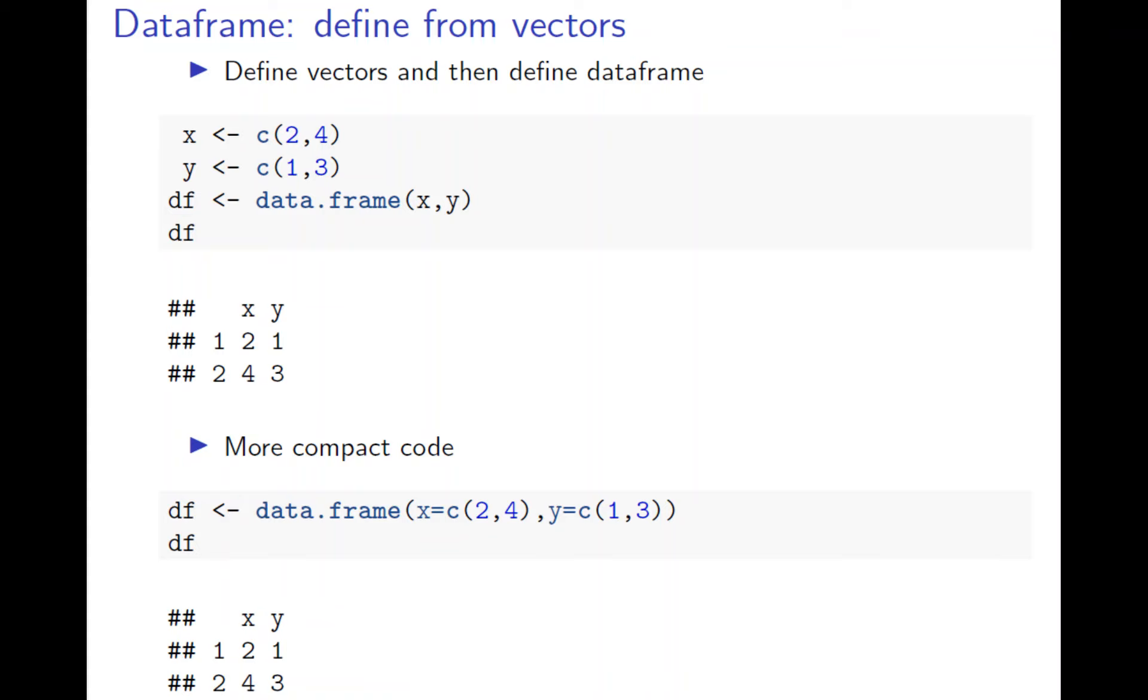How are other ways to work? Sometimes you have vectors, then you want to combine them into a data frame. Define two column vectors, call data.frame, and put them together. Or even more compact: if the code is short, you can just do it directly here.